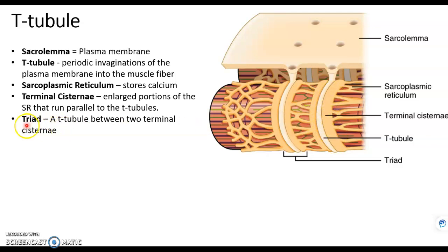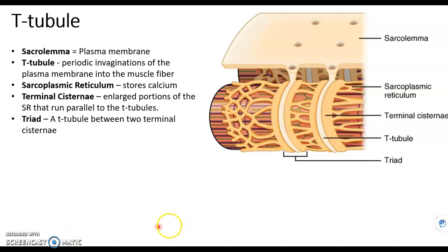What we call a triad is these three tubes: the T-tubule in the center with the terminal cisternae on either side. Let's see why these structures are important to finish our story of muscle contraction.